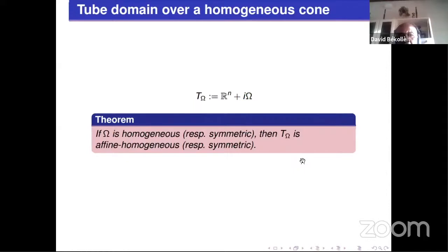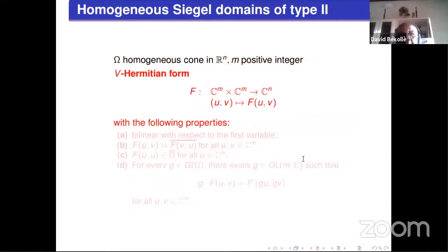Now I turn to tube domains over homogeneous cones. As Gustavo said, the imaginary part is in the cone. There is a theorem that if Ω is homogeneous, respectively symmetric, then T_Ω is homogeneous, respectively symmetric. This also says more about the counterexample of Vinberg for Cartan's question.